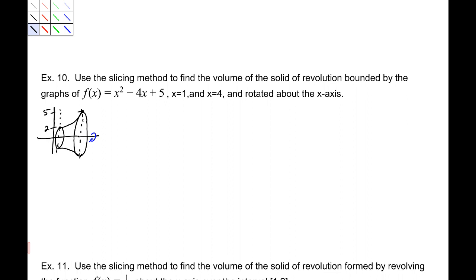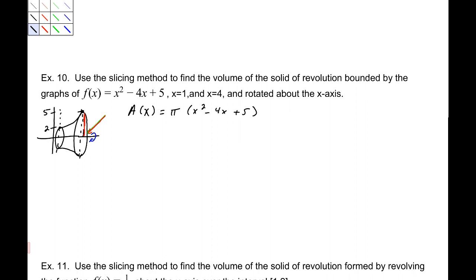Looking at this solid, we want to know what a cross-section looks like. A cross-section is going to look just like the end — it's a circle. How do you find the area of a circle? It's πr². In this case, the radius is given by the function itself.